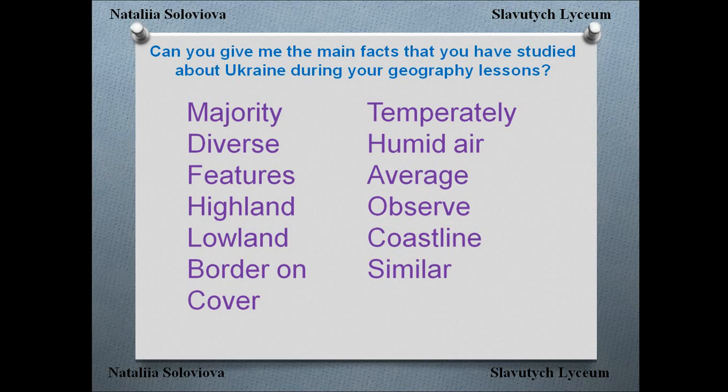The word 'cover' has a lot of meanings — for example, a phone cover or a book cover. 'Temperately' means moderately. 'Humid' means moist air. 'Average' means middle or typical. 'Observe' means to watch or note. 'Coastline' means the shore area. And 'similar' means alike.